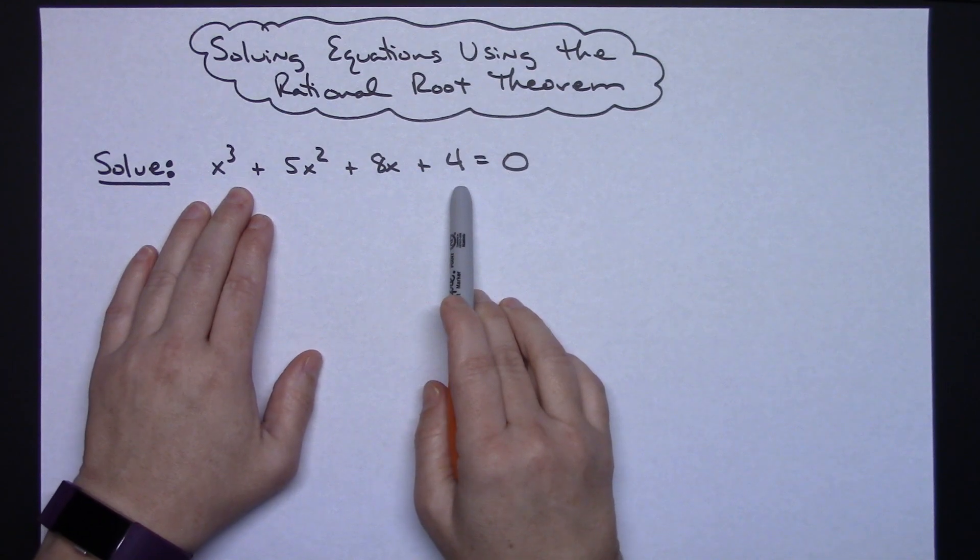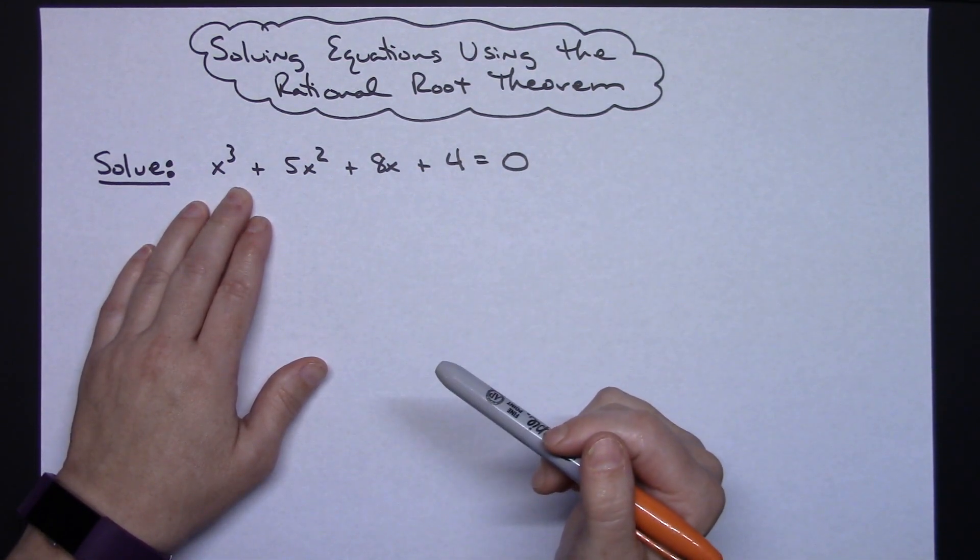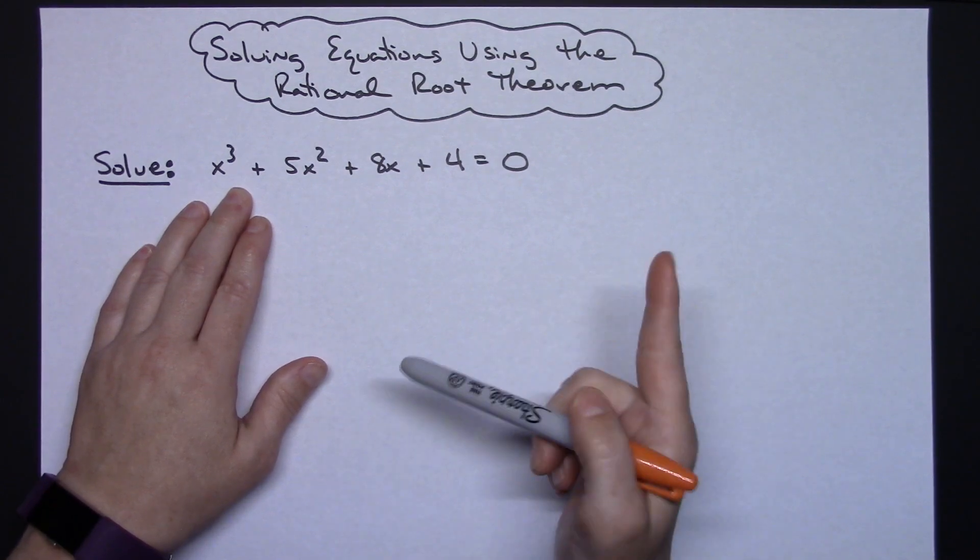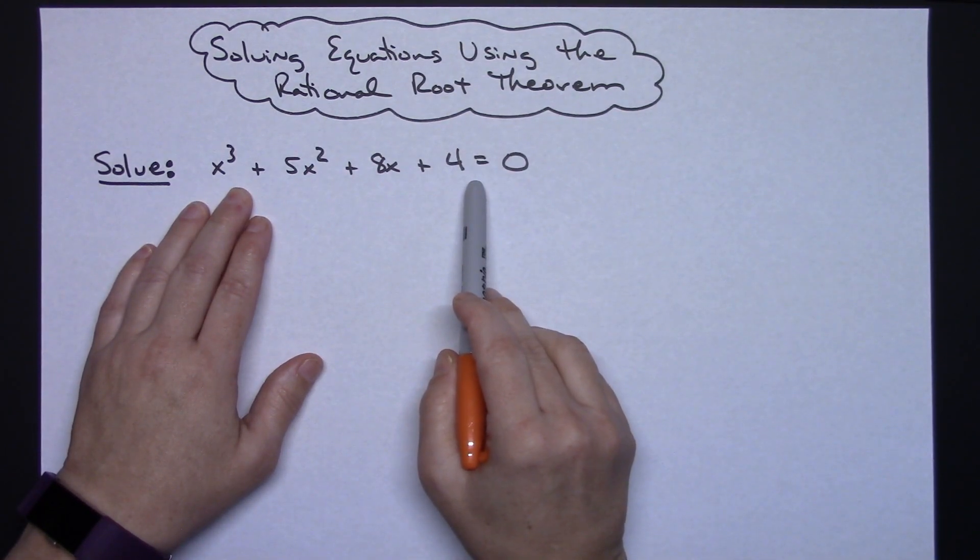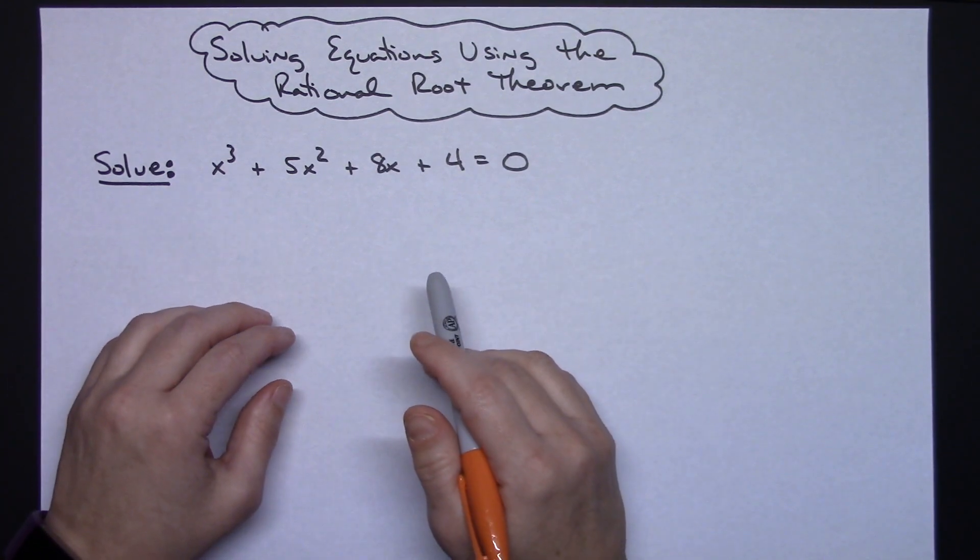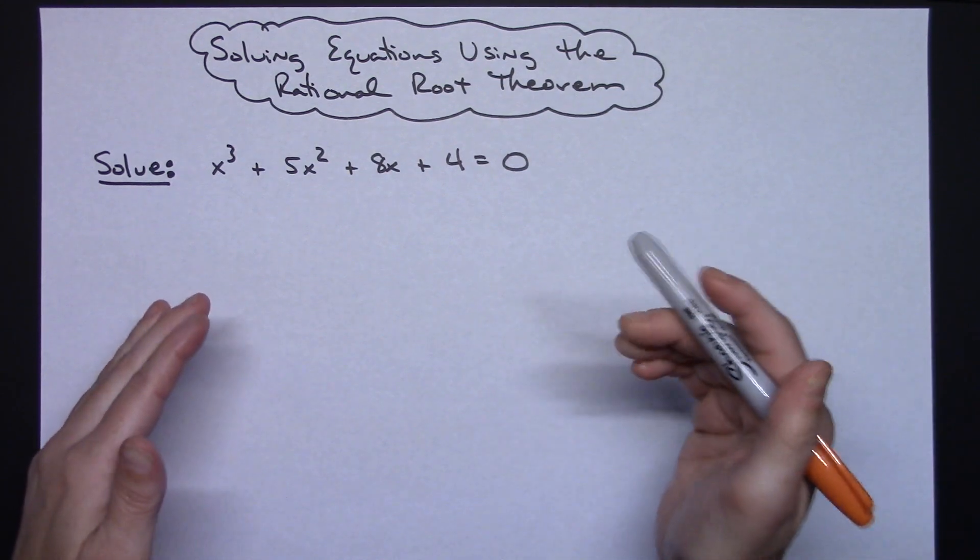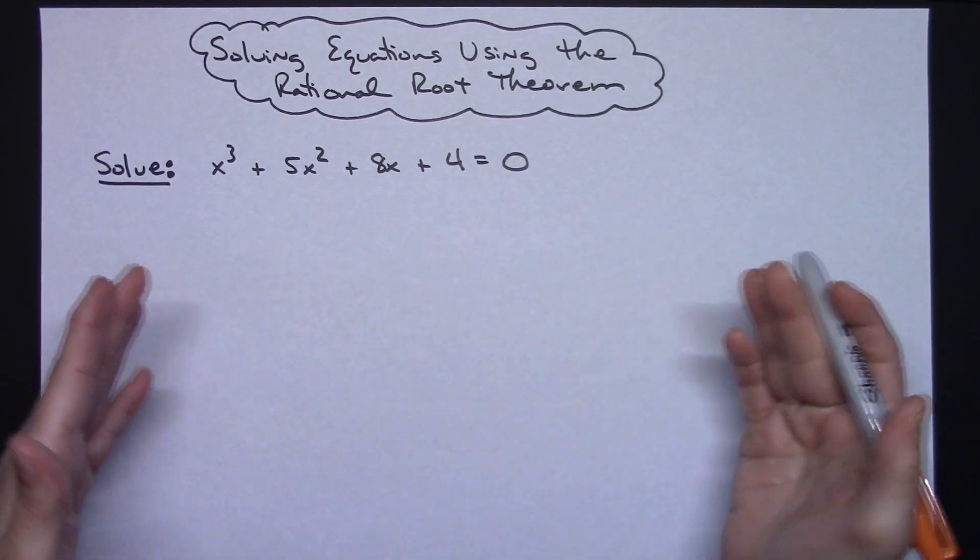If your equation has four terms and you're not sure how to go about solving it, the first thing you should probably always do is try factor by grouping and see if you can factor this into two products set equal to zero, and then you could use the zero product rule, zero product principle, and set both of them equal to zero and solve.